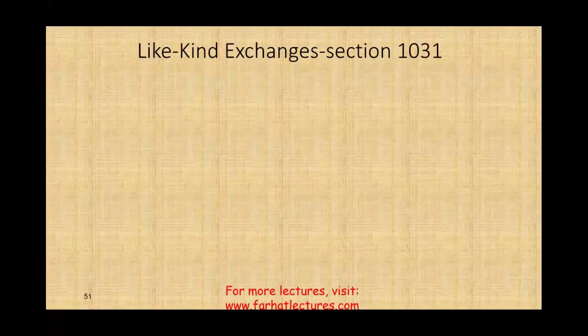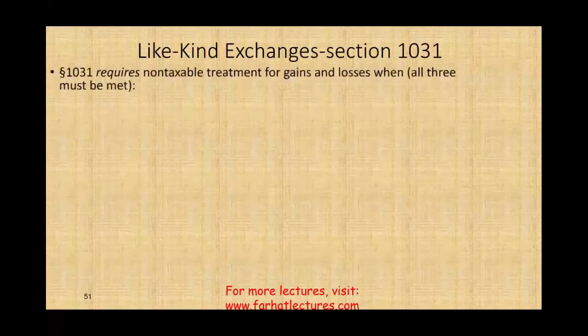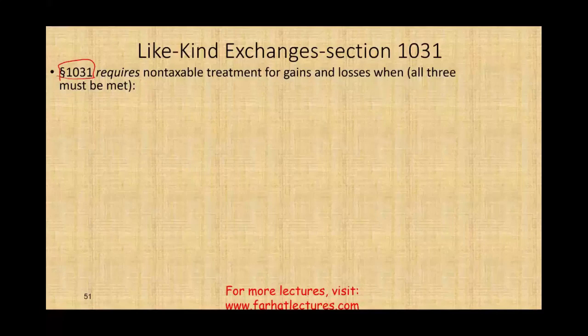A like-kind exchange means exchanging one asset into a similar asset. It doesn't have to be exactly the same. On the CPA exam and in your courses, they will state it's a like-kind exchange. It could be an office building versus a rental property, or land versus a warehouse — it can still be a like-kind exchange. Section 1031 of the income tax code requires non-taxable treatment for gains and losses when all three conditions are met.